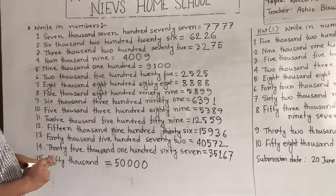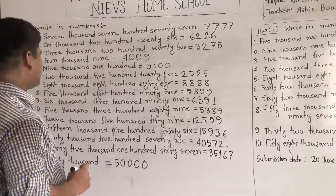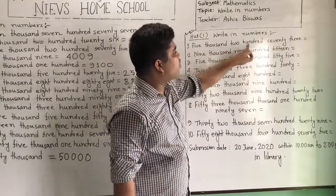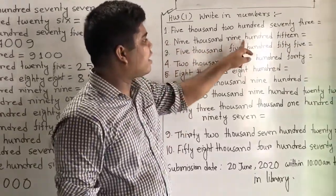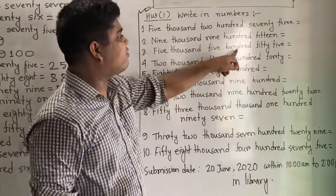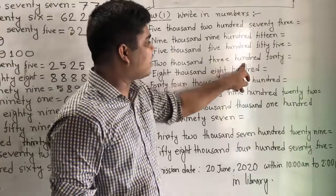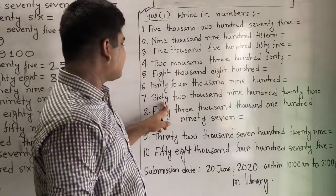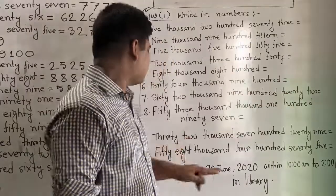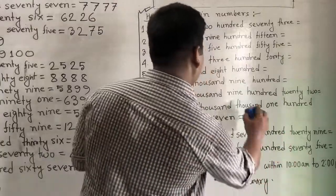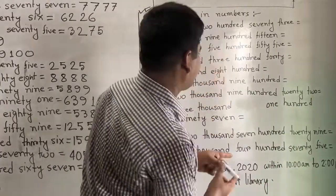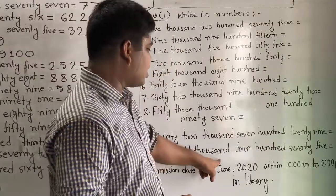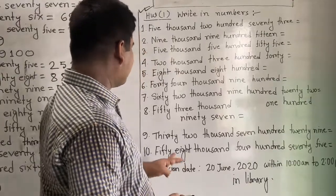This is our today's lecture. Numbers 1 to 15 are your CW. Your SW numbers are: 5,273; 9,915; 5,555; 2,340; 8,840; 4,496; 60,2,922; 5,396; 5,3197; 6,729; 5,8475. These are your SW.